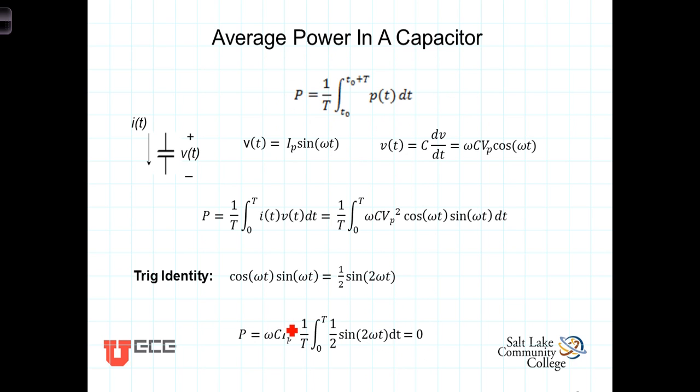We have a similar situation considering the average power in a capacitor. Once again, there is a differential relationship between the voltage and current. In the capacitor, if we specify the voltage as being sinusoidal like that, and this should be a V sub P, then the current will be C times the derivative of the voltage. And the instantaneous power P of T is omega C V sub P squared times the cosine of omega T times the sine of omega T.